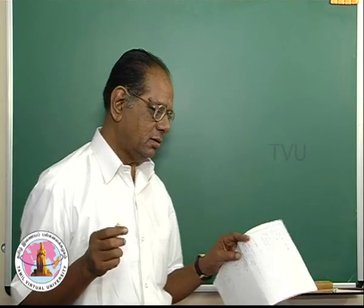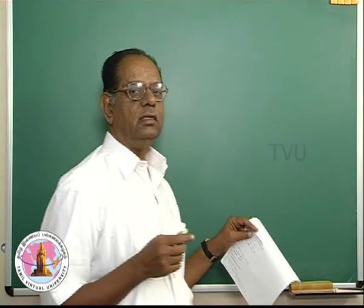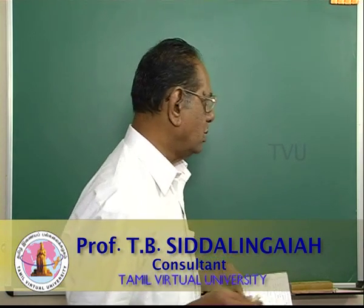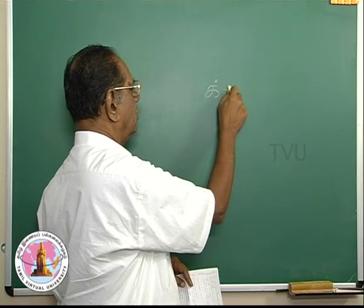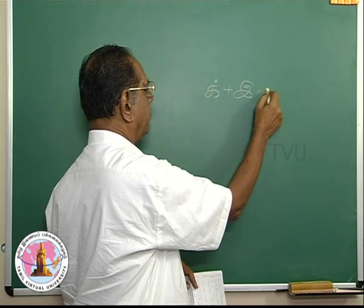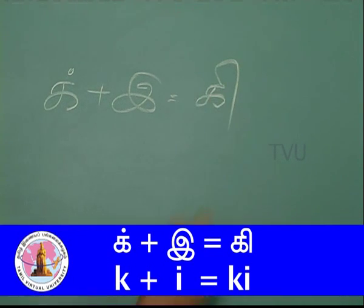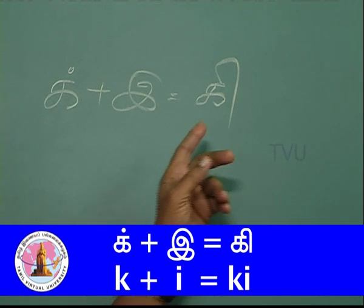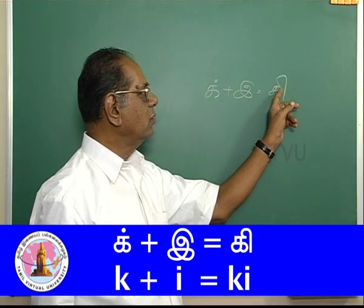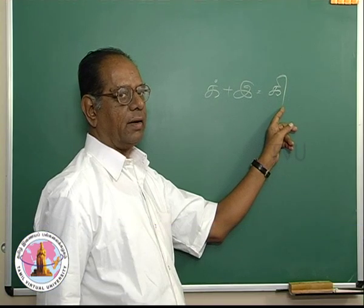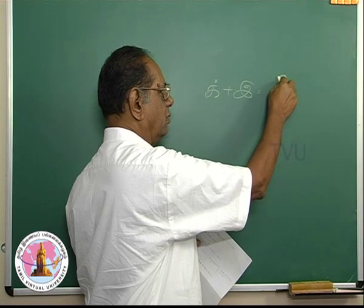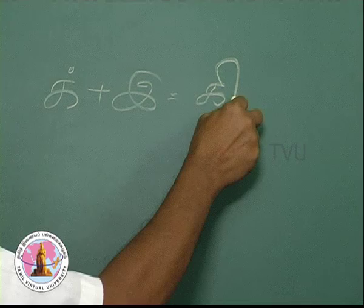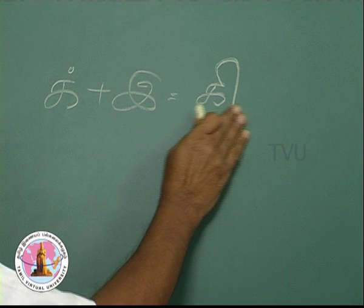In the last class, we saw the combination of the oval e with all the consonants, starting with k plus e becoming ke. For this, we made use of a hook on the right side of the letter. The hook starts at the end of the letter on the right, goes up, takes a downward curve and then comes down. This is ke.